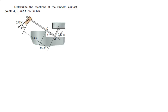Alright guys, let's do this problem where you have to determine the reactions at the smooth contact points A, B, and C on the bar. Right off the bat, you gotta draw the free body diagram. It's gonna be confusing. All you gotta do is just think about it. Whenever you're drawing a reaction, try to look at the surface — not the assembly, but the surface that is reacting.